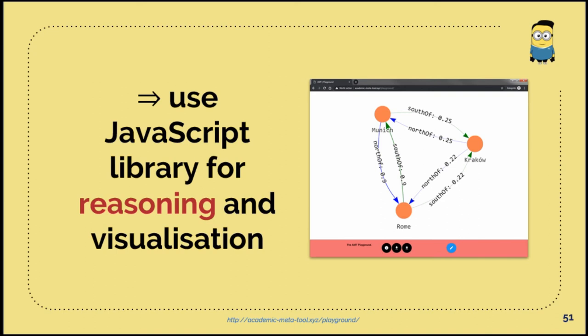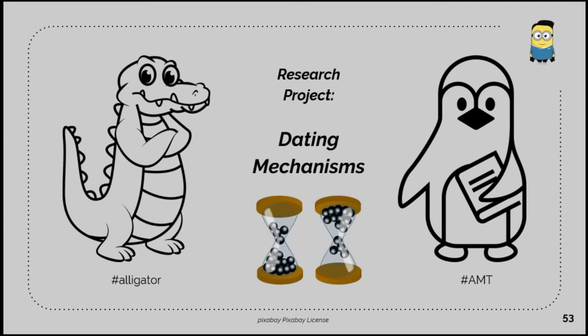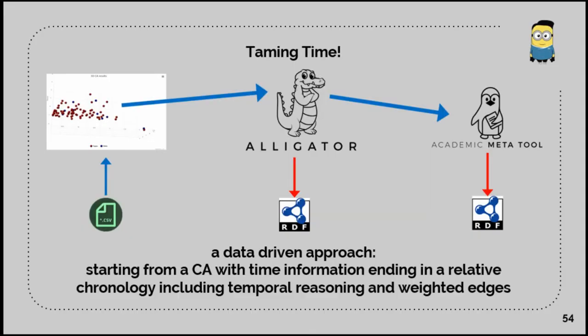How we have done that, we'll just show in one more slide because we'll try to take time in the end. We have done this in a small research project in the so-called Dating Mechanism project. We just started with a CA, used the alligator to fix these floating values, for example, in reigning years or whatever, and then to do some reasoning with a certain degree of vagueness with the academic meta tool to have an output as RDF in the end. That's the main thing why we developed these two small minions.